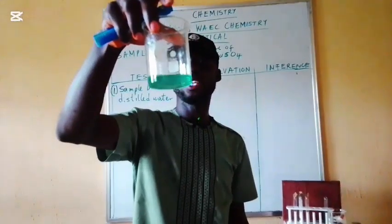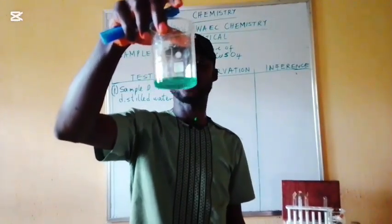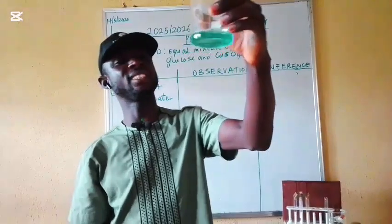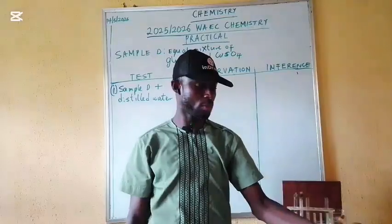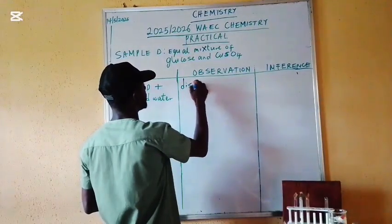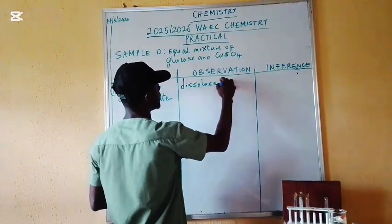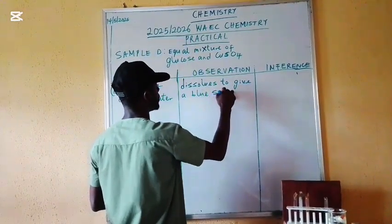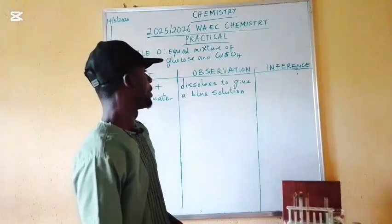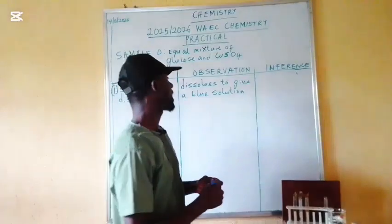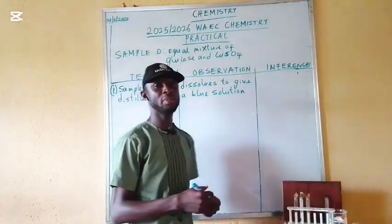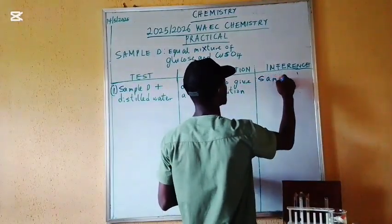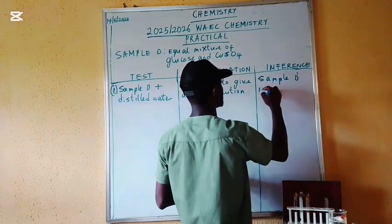Our sample has dissolved in the water. Our observation is: sample dissolves to give a blue solution. Our inference: since our sample has dissolved to give a blue solution, it means that our sample is soluble. Sample B is soluble.